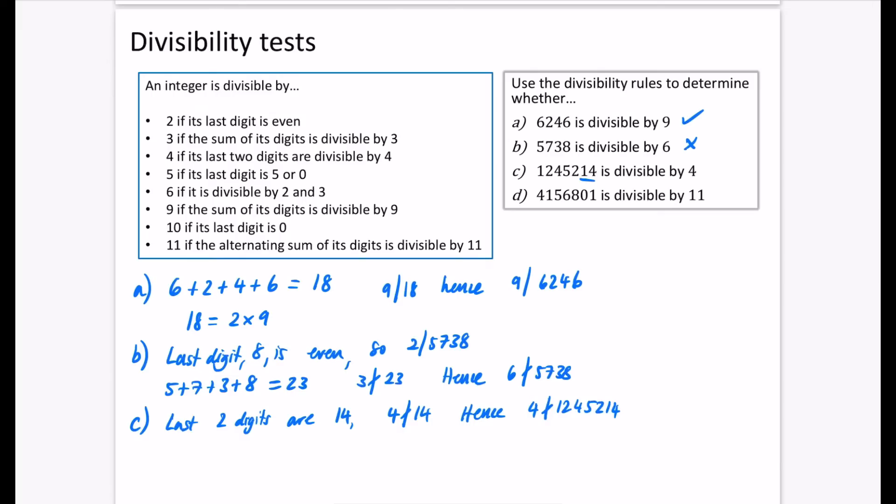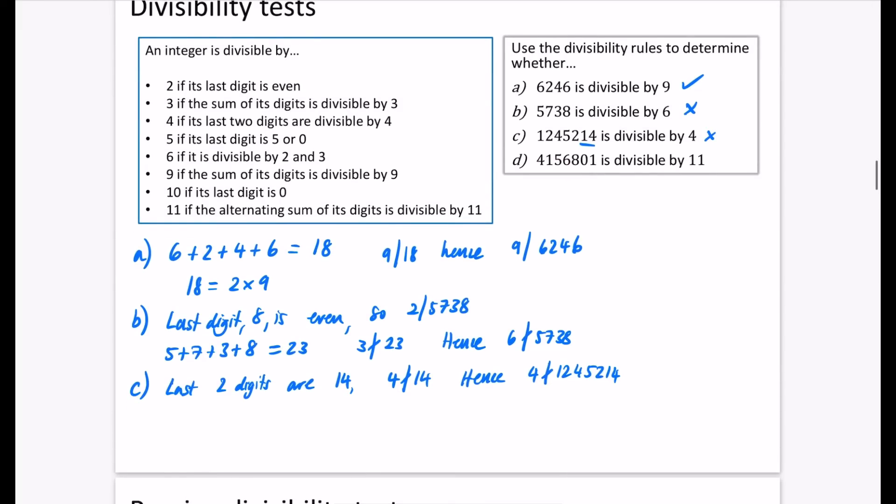Now here's our last one, which is to show that something is divisible by 11. We're going to be doing the alternating sum. So the alternating sum for this is literally just doing positive 4, negative 1, positive 5, negative 6, positive 8, negative 0, positive 1. Now we add these together, you get 4 minus 1 plus 5 minus 6 plus 8 minus 0 plus 1, which is equal to 11. And that is divisible by 11. Hence, we can say that 11 divides 4,156,801. So this last one is true.